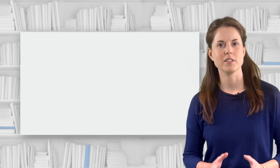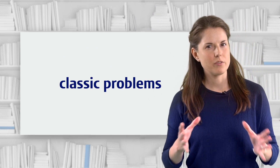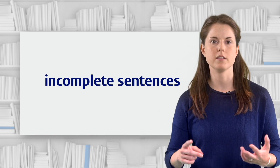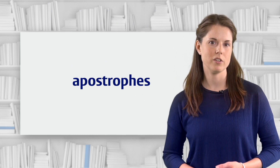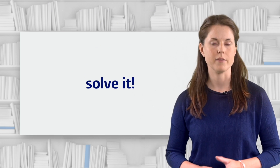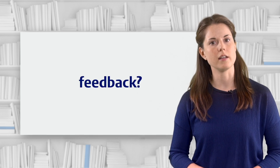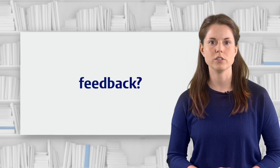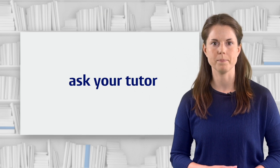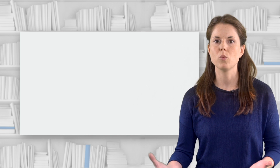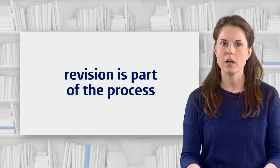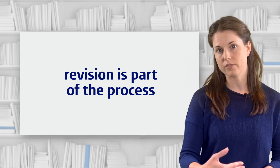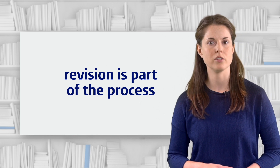So, we've taken a look at some classic problems here. Now, if your tutor gives you feedback about incomplete sentences, run-on sentences, pronoun antecedent agreement, or apostrophes, you'll know what you need to do to solve it. However, if you do get feedback that you don't understand, make sure to ask your tutor to clarify it or help you understand the problem. Lastly, you don't need to wait for your tutor's feedback to start improving your work. Revision is part of the writing process, so as you revise, you can also look out for the errors we've introduced in this video. Good luck with your writing. Thank you.